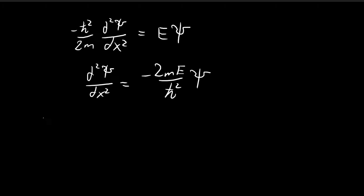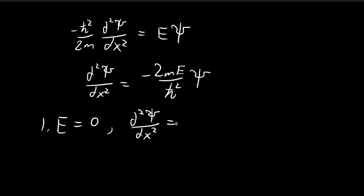The first case we're going to consider is when energy is equal to zero. When energy is equal to zero, this whole term is just equal to zero. That means the second derivative of psi of x is just equal to zero, so psi of x is equal to some constant A plus some constant B times x.